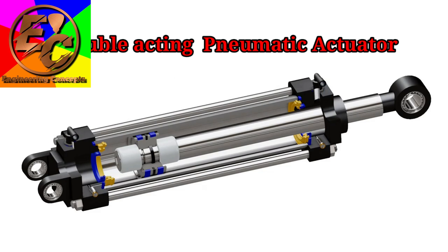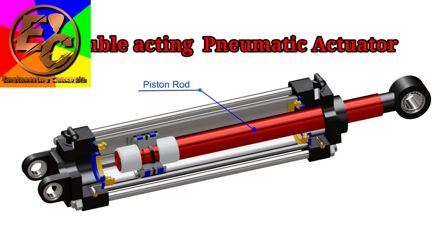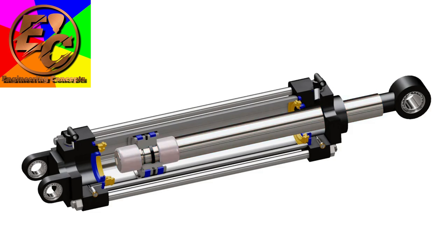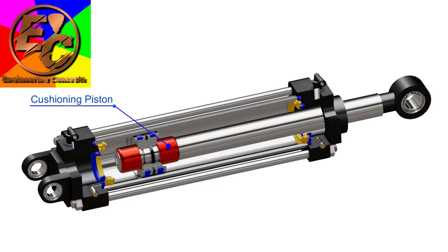It consists of a piston rod, which transfers the force of compressed air to the load. Cushioning pistons are assembled with this rod. These pistons prevent any hard shocks at the end of the stroke by enabling the piston to stop slowly and gradually.